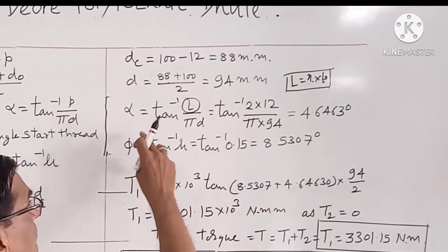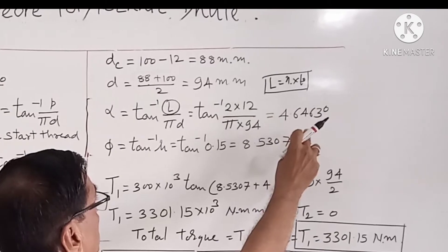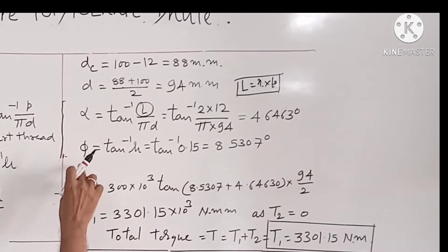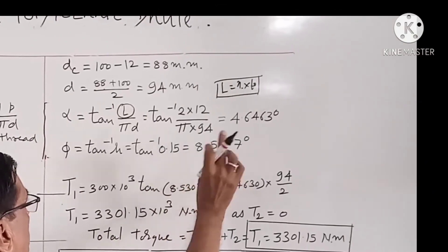The value of α comes out to be 4.6463° and the value of φ comes out to be 8.5307°.